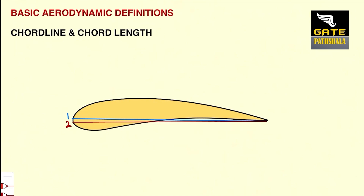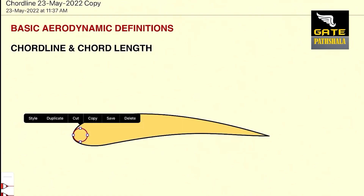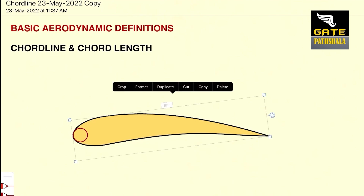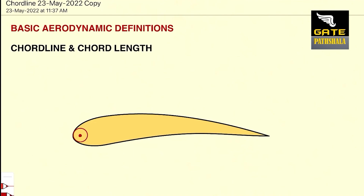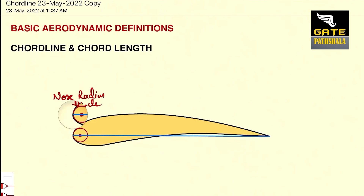So, in order to get the exact thing, one must know the proper definition of a chord line. To figure that out, using the leading edge curvature of the airfoil, one can draw a circle like this, and we can easily locate the center of the nose radius circle. There can be only one line which joins the leading edge and trailing edge and passes through the center of the nose radius circle. Such a line is called the chord line.